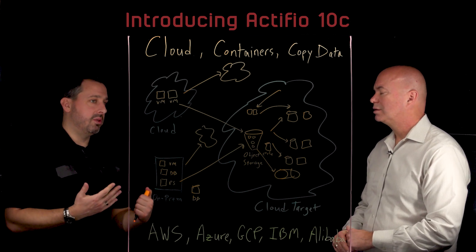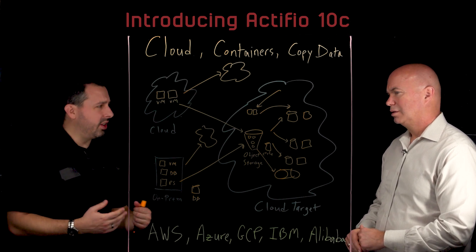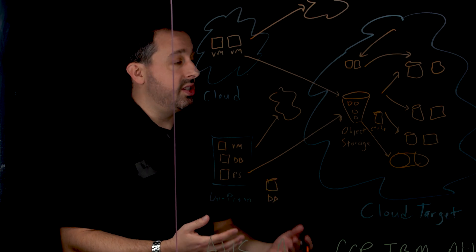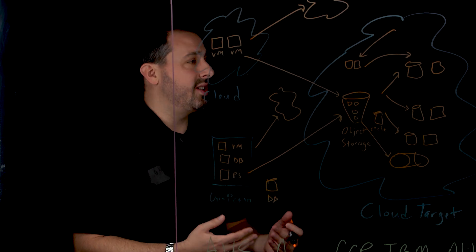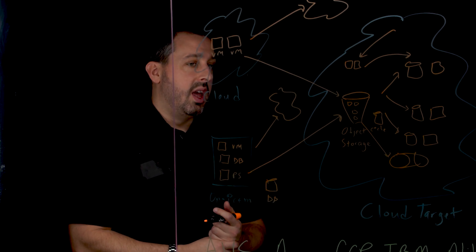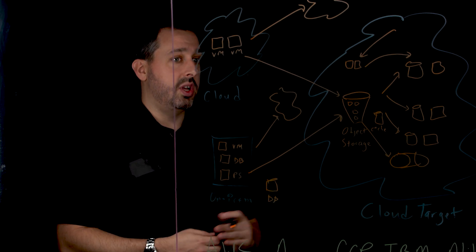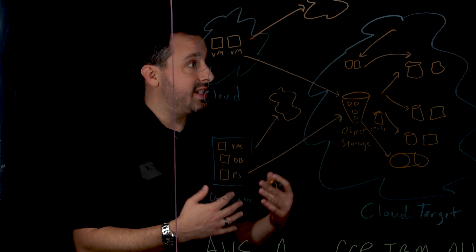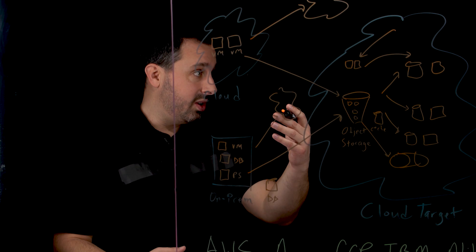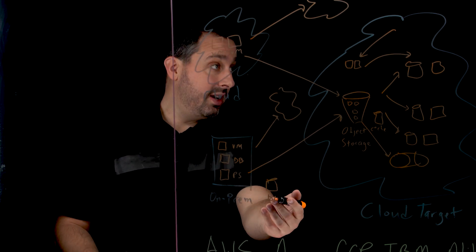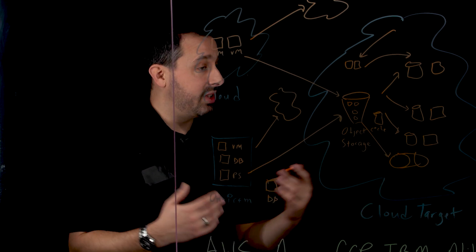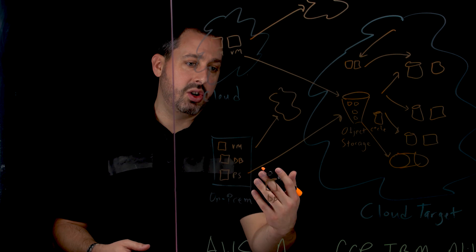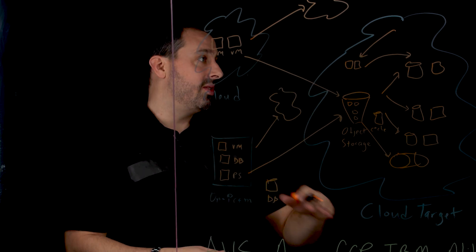Last but not least, from a copy data perspective, we're extending our leadership in that arena. We've created database wizards inside our UI to give customers a really easy way to onboard new workloads to a copy data solution. We've also extended our relationship with Dell EMC — we can orchestrate storage snapshots. We've been able to do that for Pure and IBM in the past; now we can do it for Dell EMC Unity. So if you have a big Dell EMC stack, you're able to utilize storage array snapshot management with Actifio — to send that data to a Data Domain for, say, 30-day backup, or to Dell EMC ECS for longer-term retention. If you've got an investment in Dell EMC, you're able to extend your capabilities to a single pane of glass with Actifio to manage copies of that data.